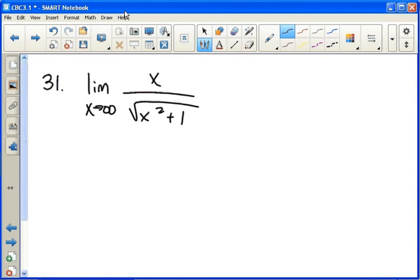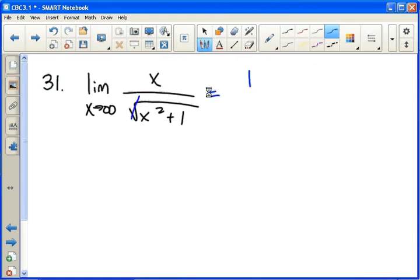On top, we get one. On the bottom, if it's helpful, rewrite this as to the one half, and you have to use the chain rule, derivative of the outside times the derivative of the inside. But before we do anything else, let's go ahead and simplify.